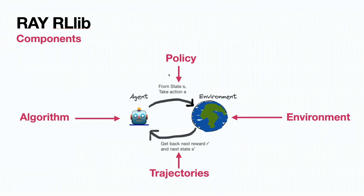The policy is something that you usually train. The policy takes state S and returns an action that is later passed to the environment. Ray RLlib never trains one agent — it always trains a set of agents. Each of the agents builds a trajectory of states, actions, and rewards, and they are captured in another class called trajectories.